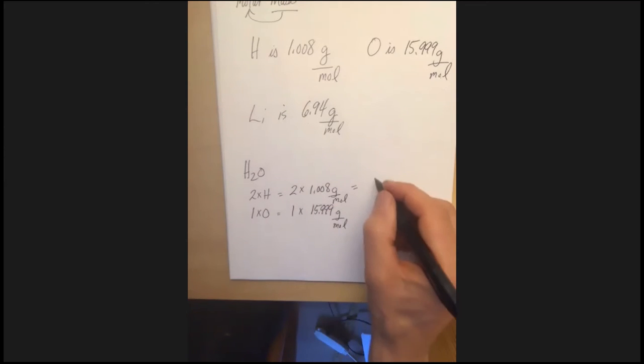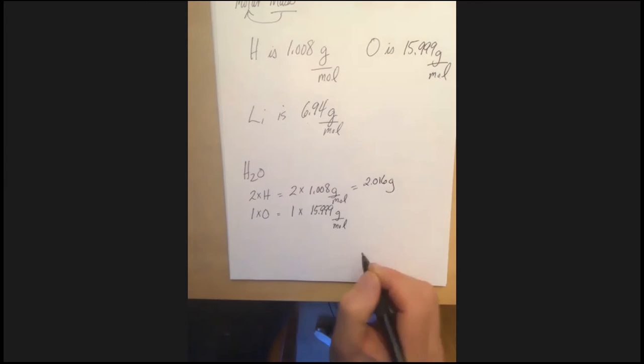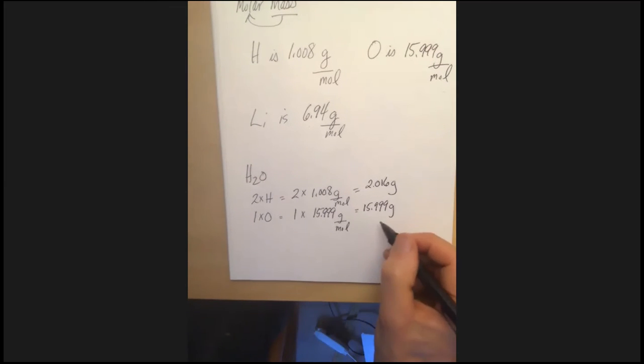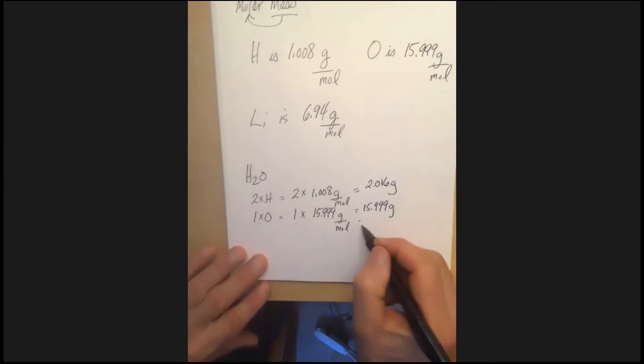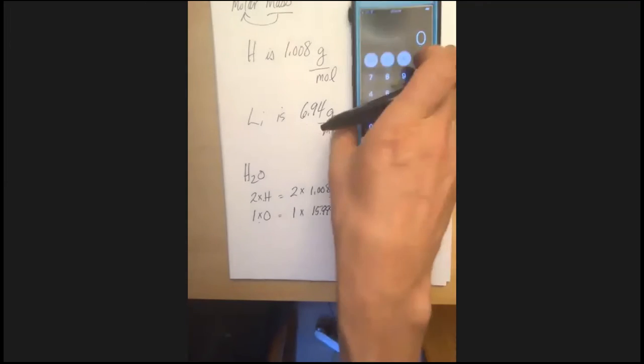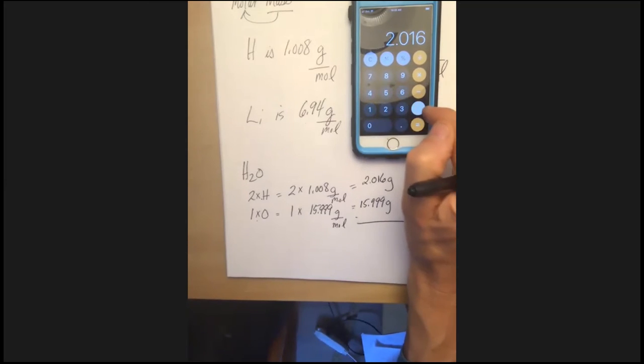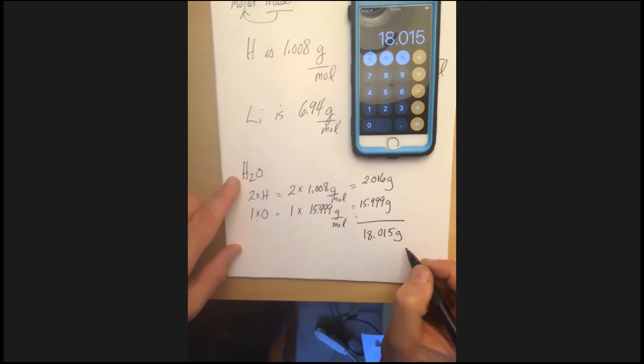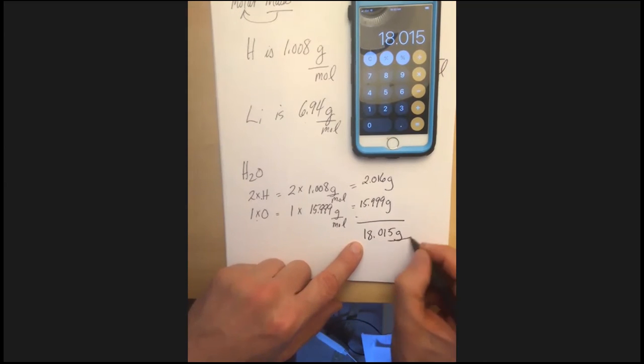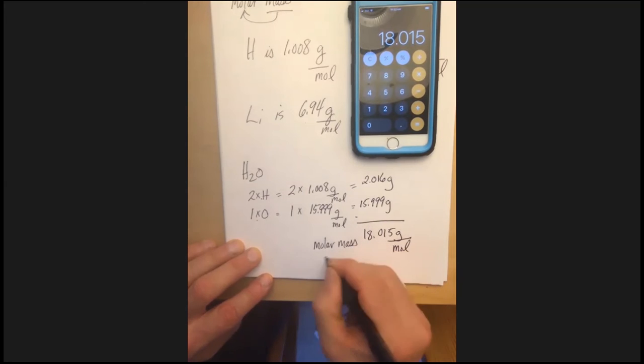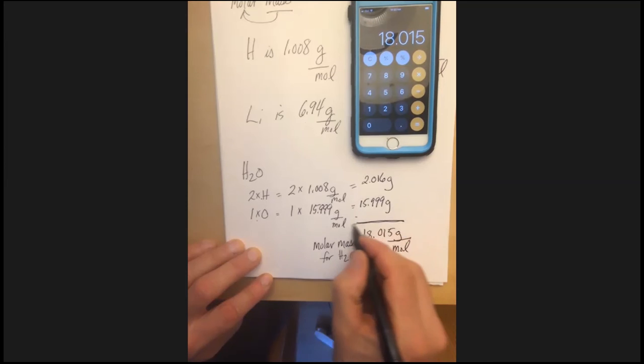This two times 1.08 is going to be 2.016 grams. And so for water, it's got two hydrogens and one oxygen, so I'm going to add those together. And I could do them in my head, but I'll probably carry my ones wrong incorrectly if I do that. So I just want to double check and make sure I do it right. So I'm going to go 2.016 plus 15.999 equals 18.015 grams. And that's, we were talking about one mole of water, so it's 18.015 grams per mole is the molar mass for water. And I'm pretty confident about that, so I'm going to circle it. So that's water.